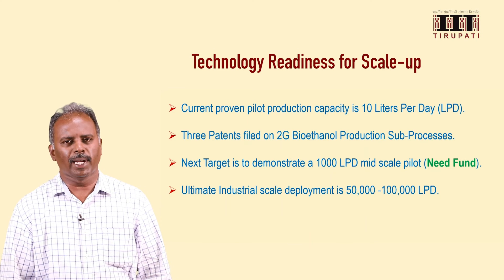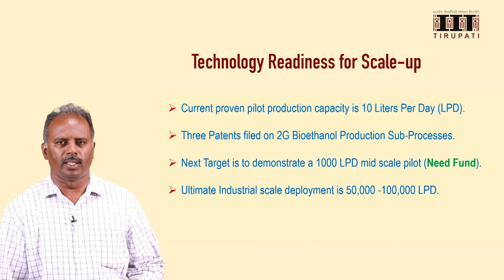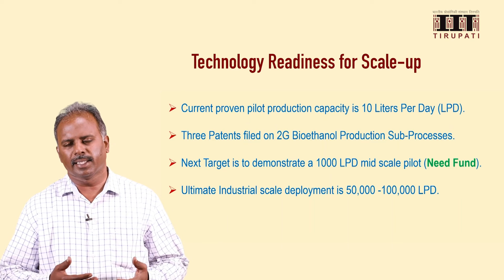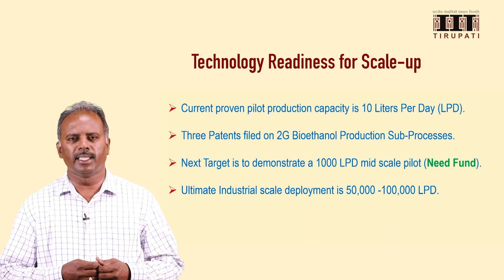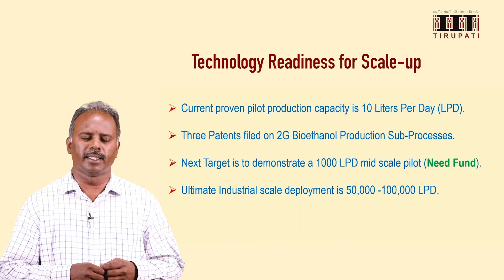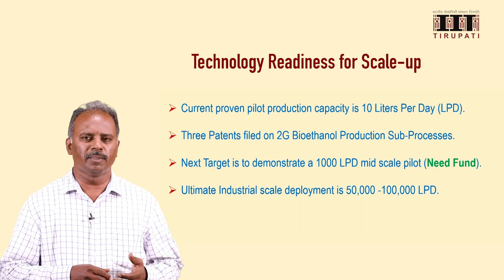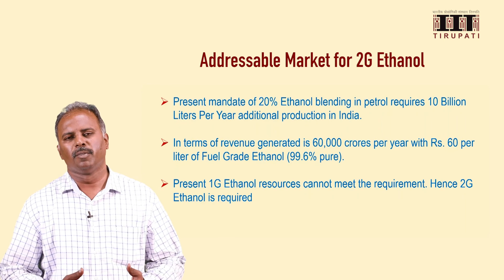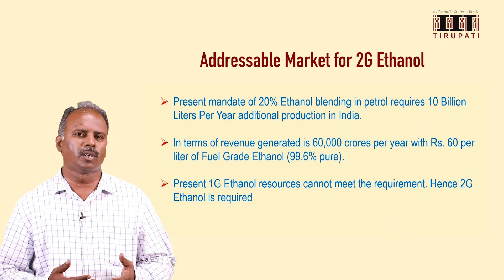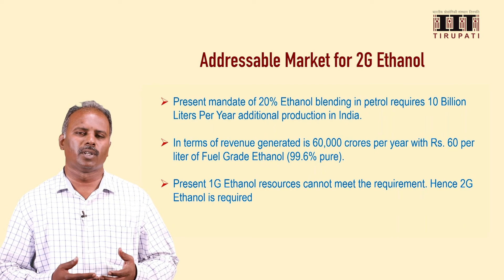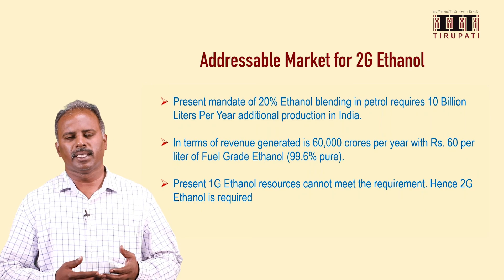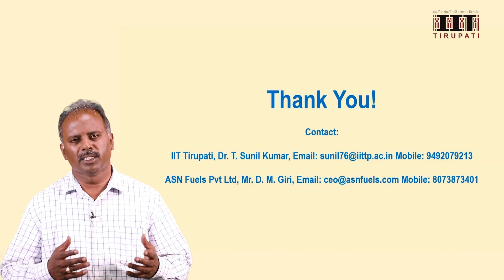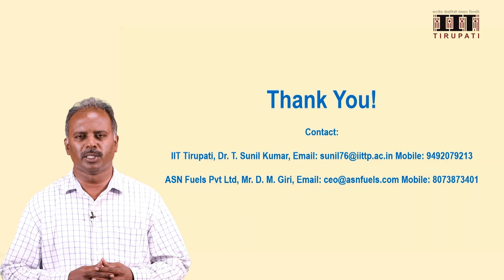Regarding the technology readiness level, at the pilot plant we are able to produce 10 litres per day of ethanol and have filed about 3 patents on the sub-processes used. Our next target is to develop a mid-scale pilot producing 1,000 litres per day, and eventually scale up to 50,000–100,000 litres per day capacity, with a TRL level of approximately 7 out of 10. The market for ethanol already exists — particularly to meet the E20 mandate, we need about 10 billion litres of ethanol per year. Since 1G ethanol from food materials may increase food prices, 2G bioethanol is the need of the hour. Thank you very much for your attention, and we will be happy to interact with scientists and investors related to 2G bioethanol production.